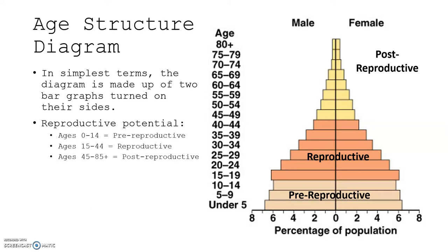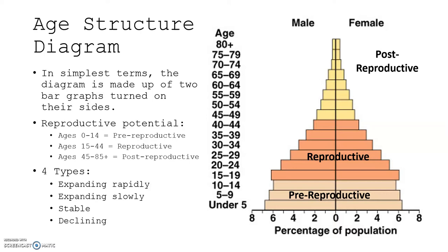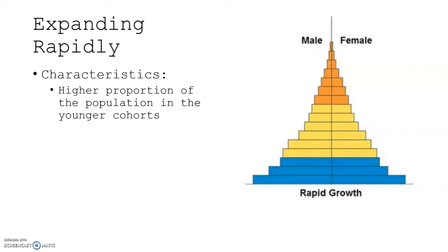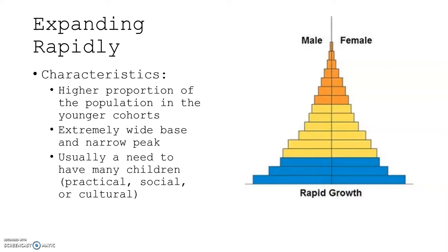There are four types of age structure diagrams: expanding rapidly, expanding slowly, stable, and declining. Expanding rapidly is characterized by a higher proportion of the population in the younger cohorts, an extremely wide base and very narrow peak. This usually reflects a need to have many children for some practical, social, or cultural reason.